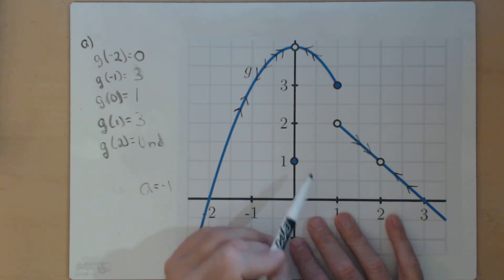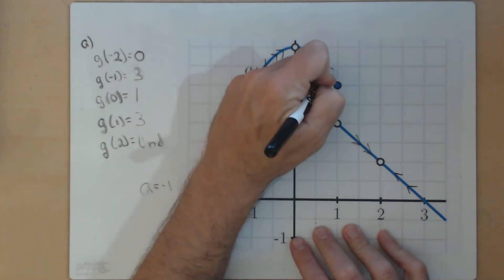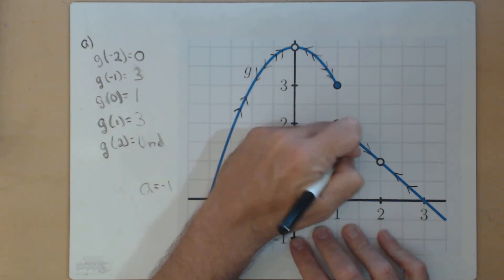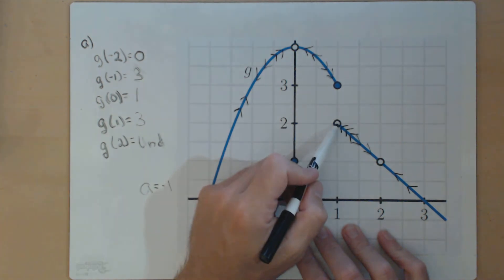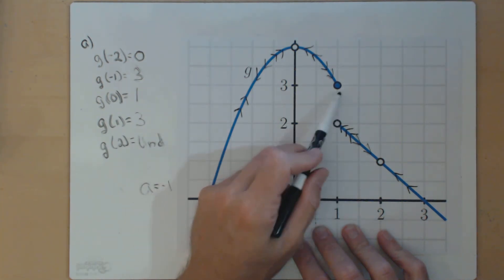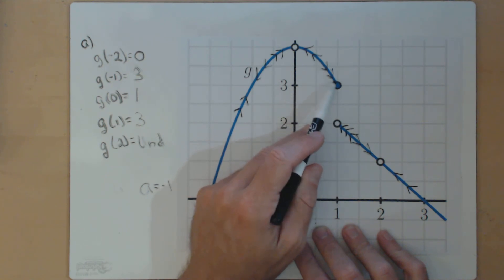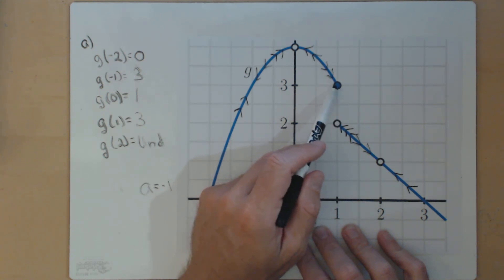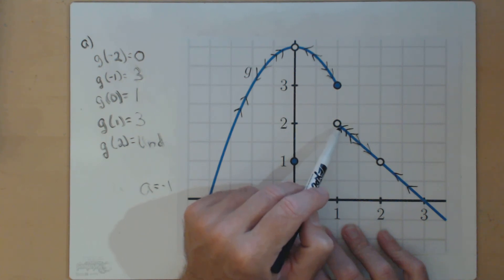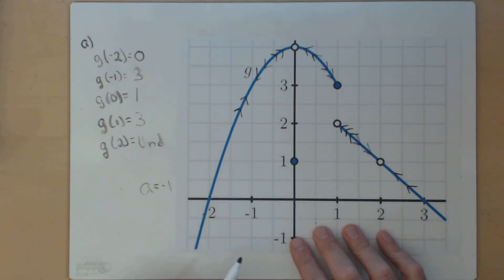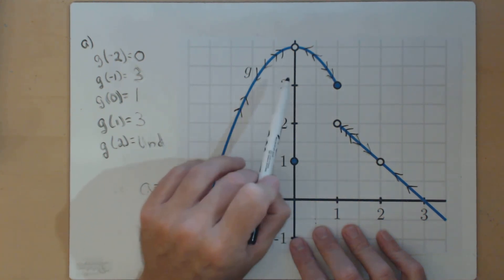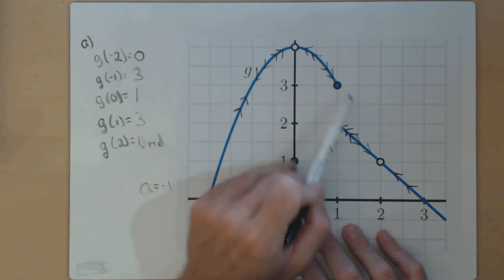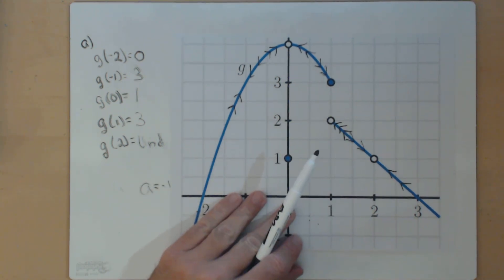Now part C — look at what happens at 1. As we come in from the left, our function values go towards 3. As we come in from the right, our function values go towards 2. So the limit is not going to exist at this point, because we're not going to the same output from the left and from the right. We're not getting as close as we want to 3 from both sides, and we're not getting as close as we want to 2 from both sides. All the other ones we looked at, we were going to the same place from the left and the right — that's what we need for the limit to exist. Here at 1, the limit does not exist because we don't go to the same place from the left and the right.